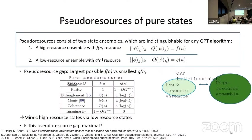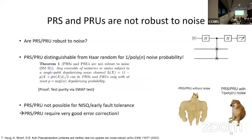Thanks for the talk. I'm a bit confused about your definition of robustness. When you mention robustness, do you apply noise only to your pseudorandom state or to both pseudorandom and the true Haar-random state? It's only applied to the pseudorandom state itself — because if you apply the same noise to both Haar-random and the pseudorandom state, they would still remain indistinguishable. The idea is you apply noise only to the pseudorandom state and then ask whether it is still indistinguishable from the Haar-random state — and obviously it's not, because now you can use the swap test to distinguish it.